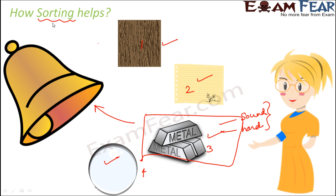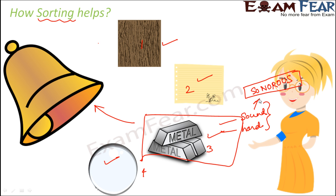When we talk about sorting, we basically divide different materials into different groups based on their properties. For example, we say that metals are sonorous — materials which produce sound when they are struck. Since metals produce sound, they are sonorous. Similarly, we sort metals into the group of hard objects, whereas we do not put cotton into the category of hard materials. Depending upon the properties of different materials we classify them into different groups, and that is called sorting. Sorting helps us understand the properties of different materials, so we know which material to use for making which object.